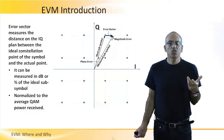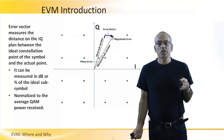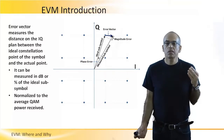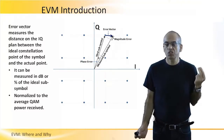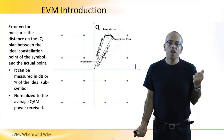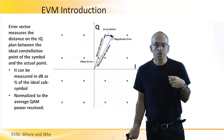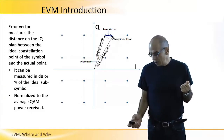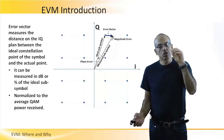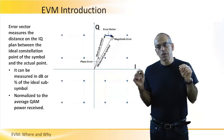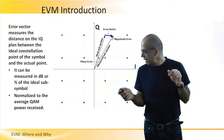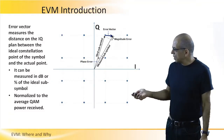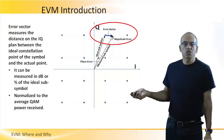But in reality, there are impairments that degrade the accuracy of the measured constellation points, and we find a different point on the constellation map than what was initially transmitted or intended to be transmitted. So we need to define this error between the ideal constellation point and the point where we find the symbol, and we do it in a vector way.